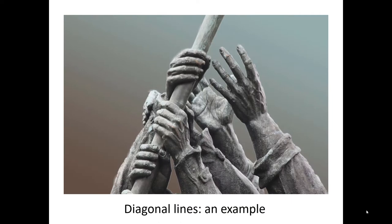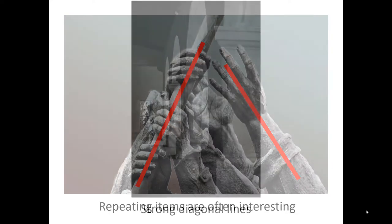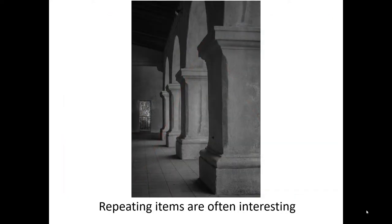Diagonal lines in a photograph are also a good thing to have. In this case, the flagpole itself represents a diagonal line. Every soldier's hand, arm, and wrist is a diagonal line, and even the fingers are diagonal lines. Diagonal lines can create strong interest.